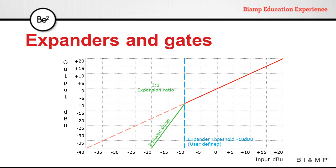If we increase the ratio to 3 to 1, the level is affected even more. In this case, a minus 15 dB input gives us a minus 25 dB output. The gain change has gone from 5 dB at the input to 15 dB at the output.